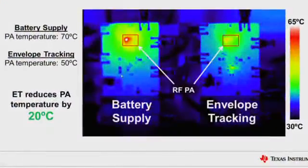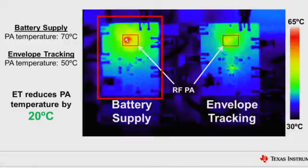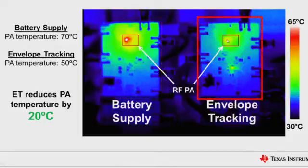Looking at this thermal image more closely, the data behind the image indicates that the PA's temperature for the battery supplied PA is 70 degrees Celsius. The temperature in the envelope tracking condition is only 50 degrees. So we're seeing here that envelope tracking for this high power, high PAR condition common to LTE is a 20 degree reduction.